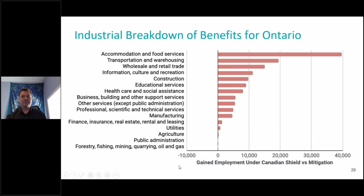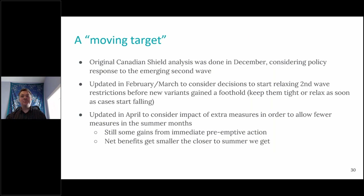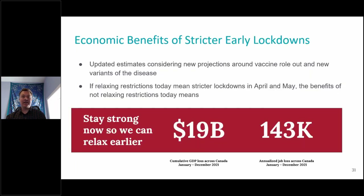This is a moving target. The original Canadian Shield analysis was done in December, as I just said. We updated it in February and March, and now we have to update again. The point is that as we're going through time, we can at least consider these alternatives. When we get to this point, the net benefits of a more restrictive lockdown now are getting smaller as we get closer to summer and as the vaccines have an effect. The last time we made these estimates, the gains were somewhat smaller than they would have been had the action been undertaken earlier. That's the type of scenario alternatives we were considering.